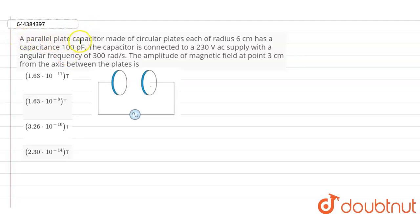So here in this question, it is given that a parallel plate capacitor made of circular plates, each having radius of 6 centimeters, has a capacitance value of 100 picofarads. The capacitor is connected to a 230 volt AC supply with an angular frequency of 300 radians per second.